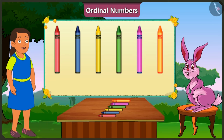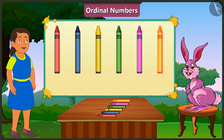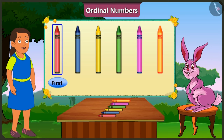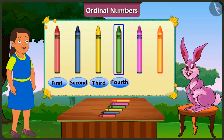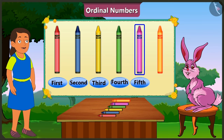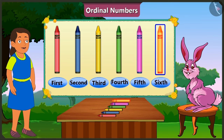This is why, in order to depict the order of crayons, we will give the first position to the red crayon, second to the blue crayon, third to the yellow crayon, fourth to the green crayon, fifth to the pink crayon, and sixth position to the orange crayon.